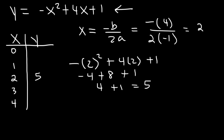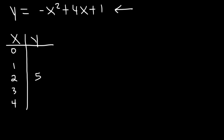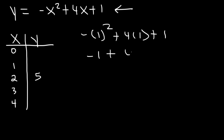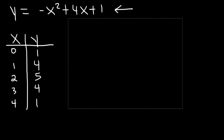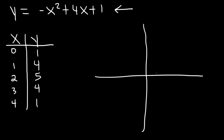Now choose two x-values to the right of 2 and two to the left. Let's plug in the vertex into this equation first: negative 2 squared plus 4 times 2 plus 1. That's negative 4 plus 8 plus 1, which is 4 plus 1, which is 5. So that's the y-coordinate of the vertex. Now let's plug in 1 — 1 and 3 will have the same y value, but it's easier to deal with 1. Negative 1 squared is negative 1, 4 times 1 is 4, negative 1 and 1 cancel, so it's going to be 4. Now if we plug in 0: 0 squared is 0, 4 times 0 is 0 plus 1, the whole thing is 1. Now we can go ahead and graph it. We're going to get a nice symmetric graph, as long as we pick two points to the right of the vertex and two points to the left.